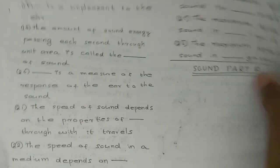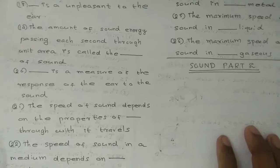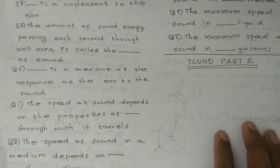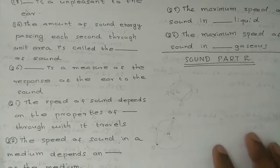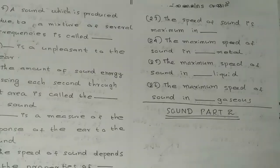Q21: The speed of sound depends on the properties of dash through which it travels. Q22: The speed of sound in a medium depends on dash of the medium.